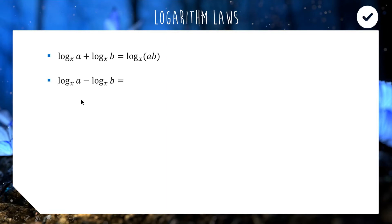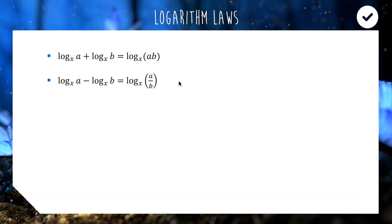The next law: log base x of a minus log base x of b. Here we can combine them into a single logarithm by dividing the subject, giving us log base x of a over b. So when you have two logarithms with the same base — if they're adding, you multiply the subjects; if they're subtracting, you divide the subjects. Two really useful properties.